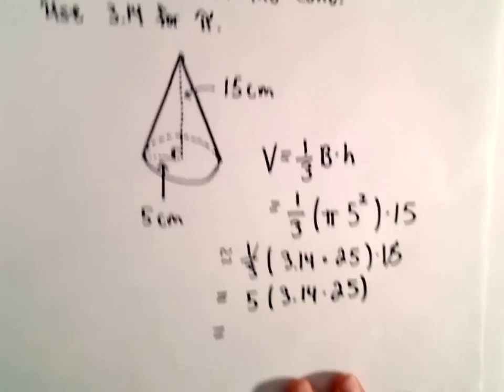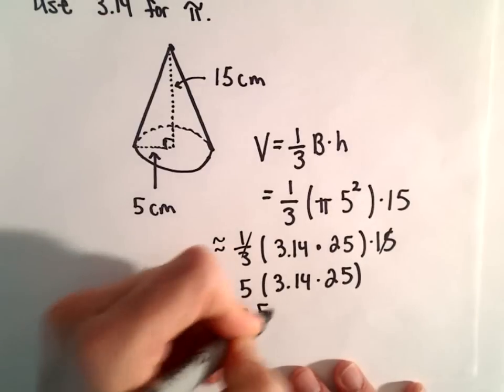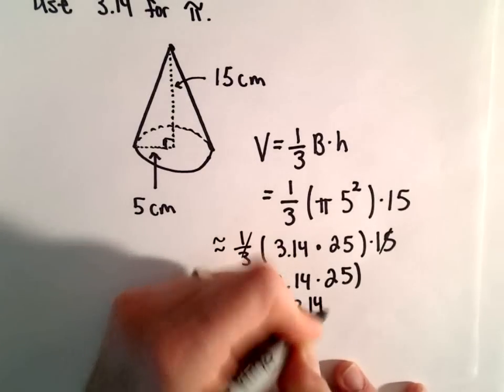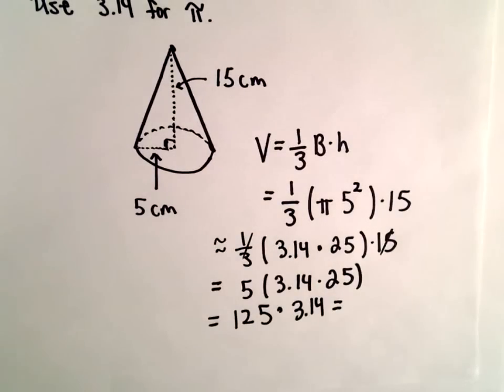Five times 25 would be 125, and then we still have to multiply that by 3.14. So I'm going to use a calculator here. So 125 multiplied by 3.14.